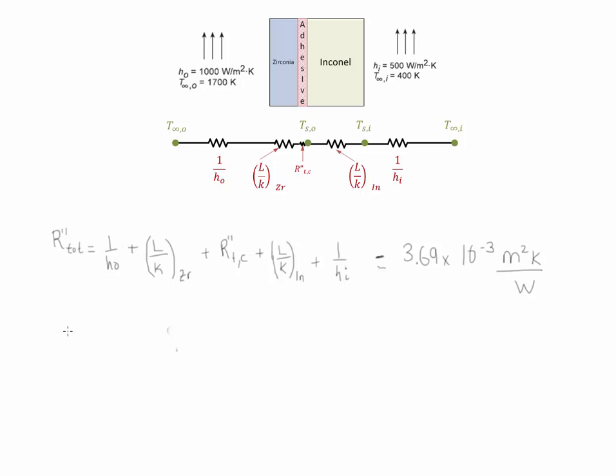Using this value now we could find what is the value of the flux going through the circuit. So we simply set that the flux is equal to the changing temperatures from T infinity outside to T infinity inside divided by the total resistance. If we plug all the values we find that the flux is equal to 3.52 times 10 to the 5 watts over meters squared. Notice that this value of the flux is going to be constant throughout the circuit.